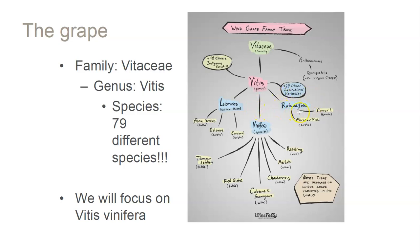Rotundifolia is also native to the United States — remember, it would be Muscadinia rotundifolia, not Vitis rotundifolia. When you think of muscadine, muscadine wine is actually pretty popular in the South. If you took my earlier course, you had a bit of muscadine — Scuppernong from North Carolina from Duplin Cellars.